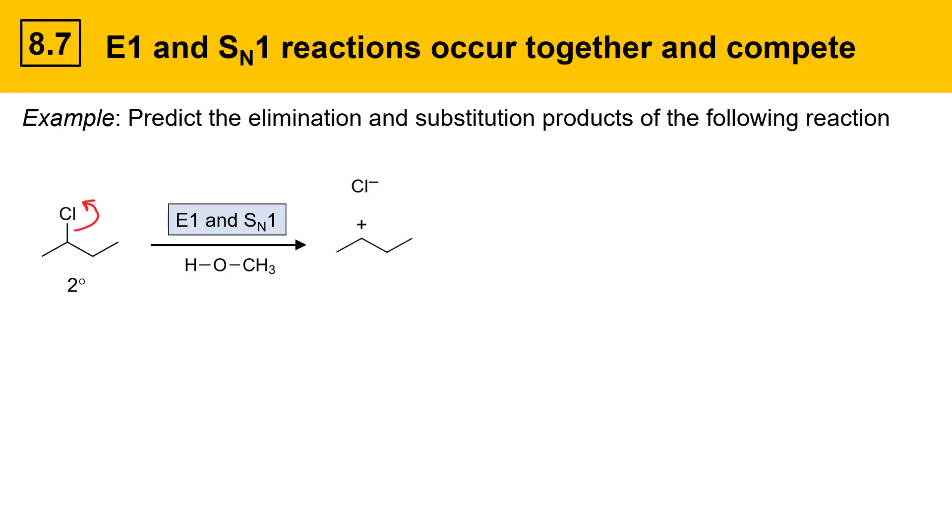Once the carbocation forms, it could either react with a base, or it could react with a nucleophile. If methanol functions as a weak base and deprotonates on the left side, the following monosubstituted alkene is produced. If the base were to deprotonate the secondary position here, we would get a trans alkene, but there's another stereochemical possibility, a stereoisomer that forms, that's the cis version, where the weak base deprotonates that same position.